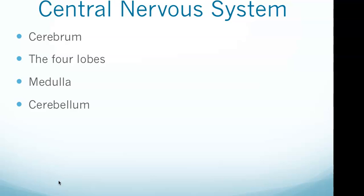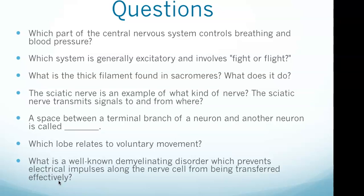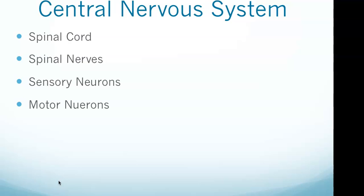The medulla controls autonomic and homeostatic functions such as breathing and blood pressure — that was our first question. Finally, the cerebellum regulates muscle coordination and balance. You really need to be familiar with all these basic parts of the central nervous system.